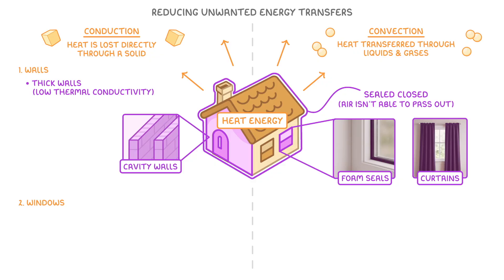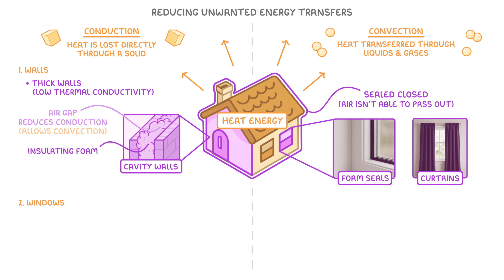Houses also tend to have cavity walls, which is where there are two layers of bricks with a small air gap or cavity between them. This air gap reduces conduction, because air is a really poor conductor. The problem though is that air does allow convection, so to fix this we fill the gap with insulating foam, which has lots of isolated air bubbles, so there's hardly any convection or conduction.